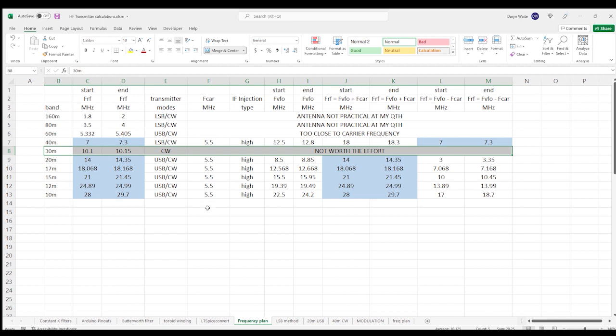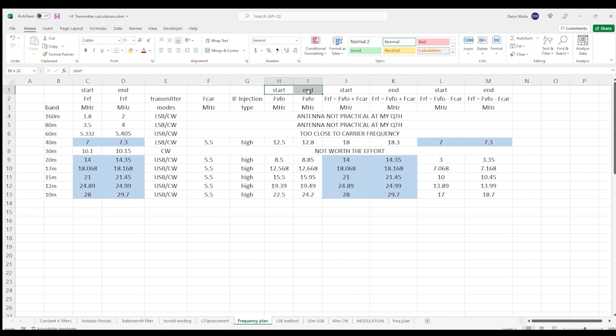So that leaves 6 bands at 40 meters and up, which is plenty of spectrum for me. These columns here show the VFO frequencies that I'll need to inject into the second mixer to cover the band frequency spread. For 20 meters and all other upper sideband bands, I'll be using high side injection and the sum of the VFO and IF frequencies to get to the transmission frequency. For lower sideband transmission on 40 meters, I'm still using high side injection, but will use the difference between the VFO and IF frequencies instead. More on why in a moment.